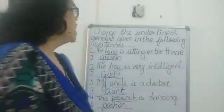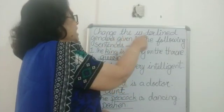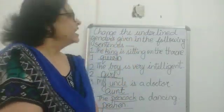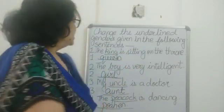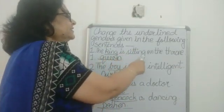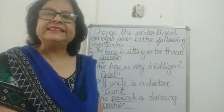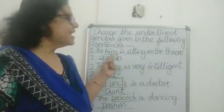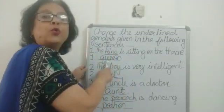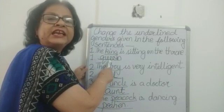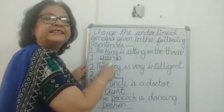Till now I have given you some examples of genders. Now I would like to show you how to change the genders of the underlined words given in a sentence. The king is sitting on the throne. The word king is underlined, and we have to write the opposite gender of king, which is queen. The opposite gender of king is queen.